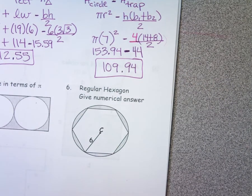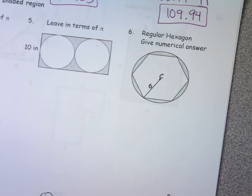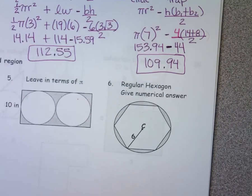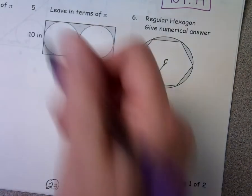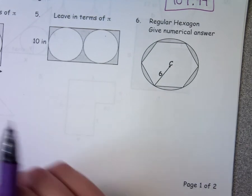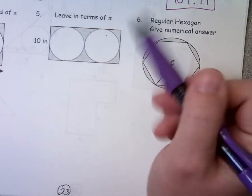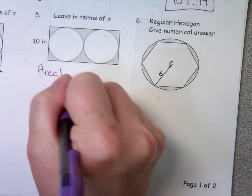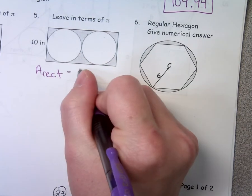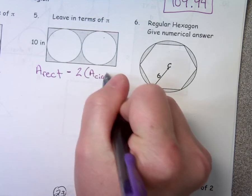Let's go to number five. Looking at number five, what do you think the game plan would be? Find the area of the rectangle and then subtract the area of two circles. That's exactly what we're going to do — find the area of the rectangle and subtract the area of two circles. So: two times area of circle.